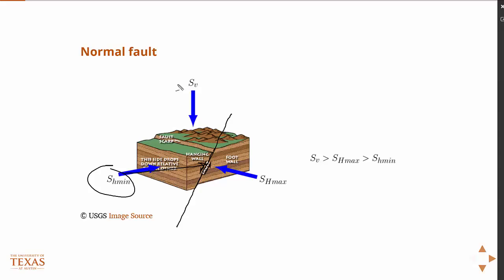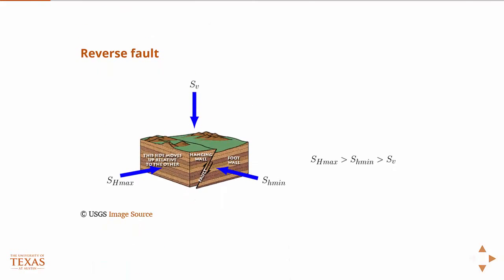So then we have the reverse fault, which is just the opposite. So in this case, the vertical stress is less than the two horizontal stresses to accommodate the motion of the hanging wall moving up.